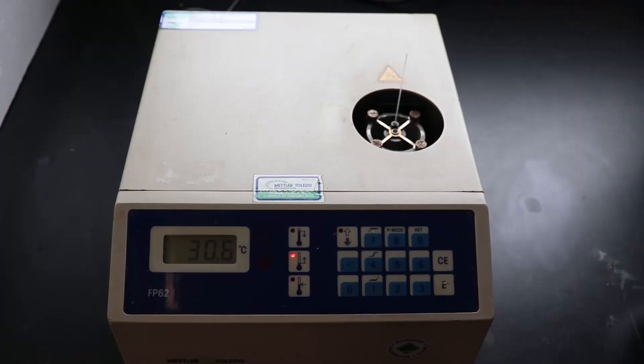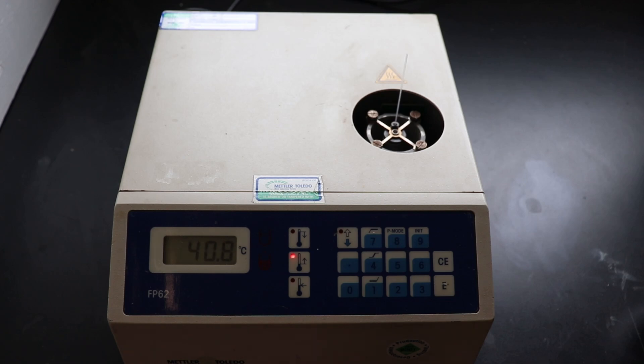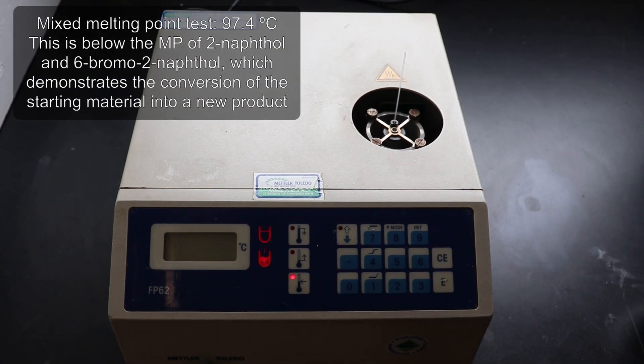If the two compounds are different, it typically results in melting point depression, whereas if they're the same, the melting point should be unchanged. When I took the melting point, I got 97°C, far below both melting points of 2-naphthol and 6-bromo-2-naphthol, indicating I have two different compounds. Taking all the data together, I'm confident I've made 6-bromo-2-naphthol.